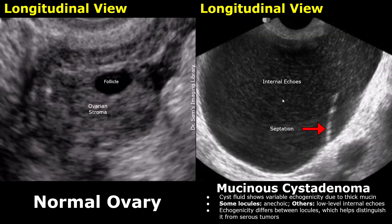This image is also of a mucinous cystadenoma. They are mostly multilocular and will have low-level internal echoes in the mass. This mass has a partial septation. The main feature is the presence of internal echoes.